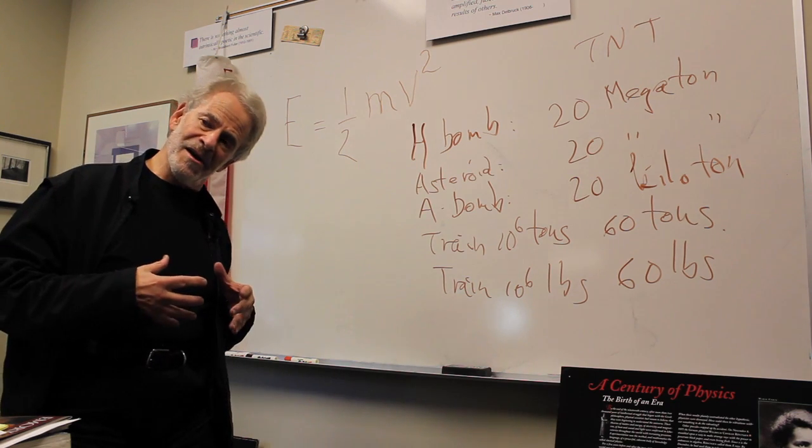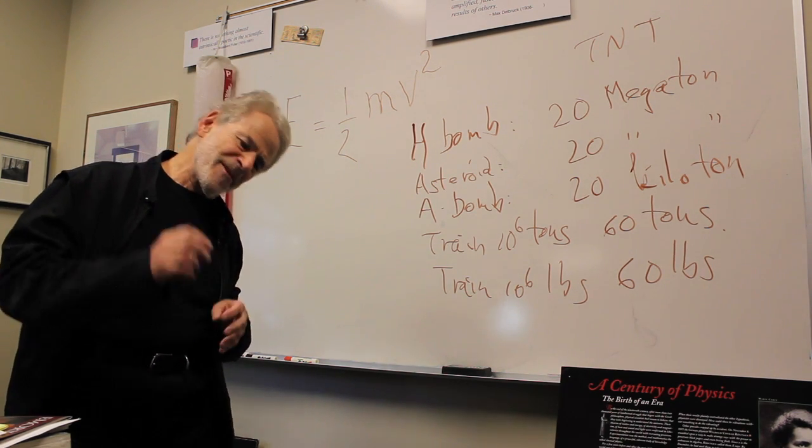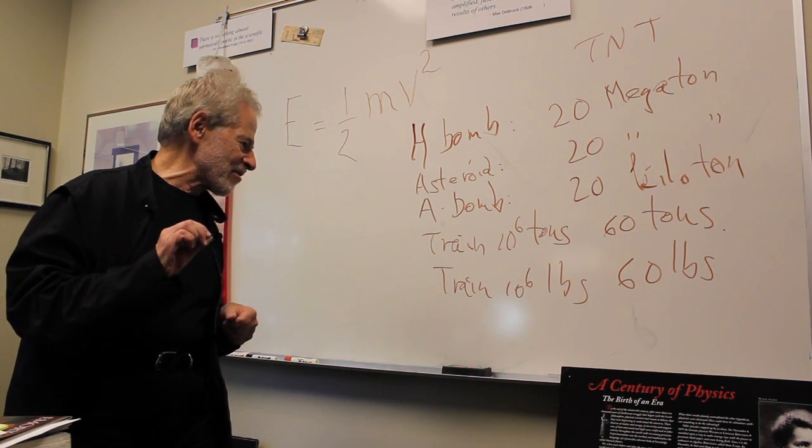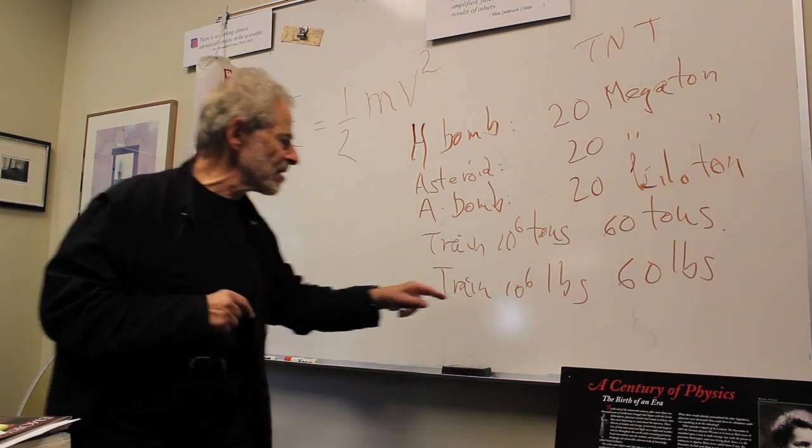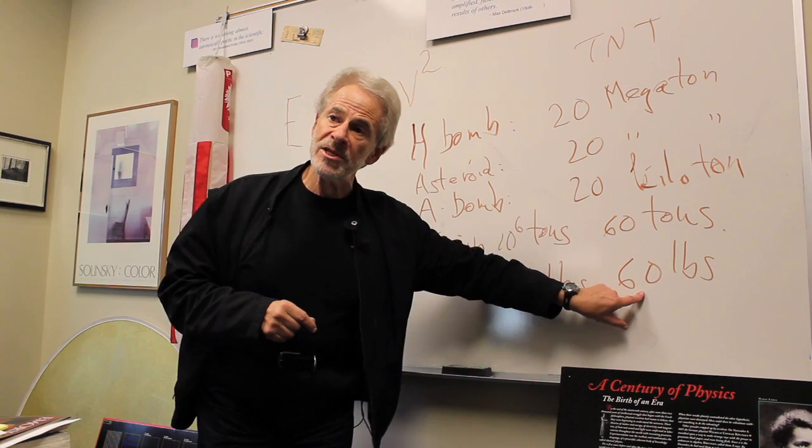But if, as I think, whoever wrote the publicity forgot the difference between tons and pounds, and the train really ought to have a weight of about a million pounds, it would be only about 60 pounds of TNT.